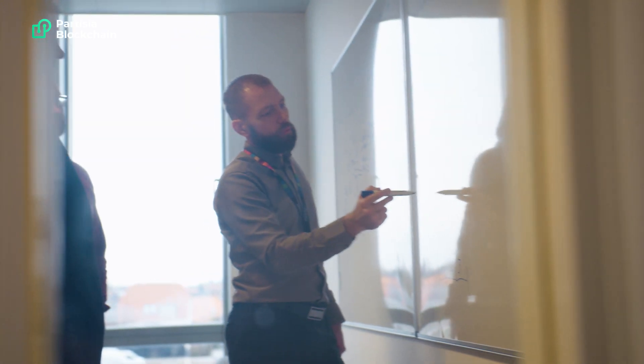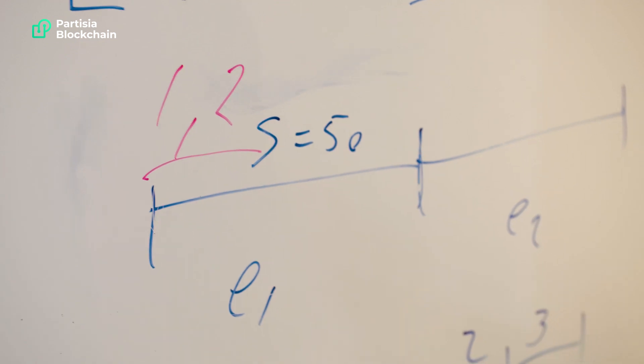The zero knowledge layer is what makes the Partisia blockchain different. It is what allows people to actually create smart contracts where not everything is public — only the results of the secret calculations are made public. For instance, when you run an auction, all the bids can be kept secret like sealed envelopes and we only reveal the winner when the auction is completed. This is important because the blockchain space has been missing a secure blockchain that allows you to perform certain computations in secret and then only reveal the results.